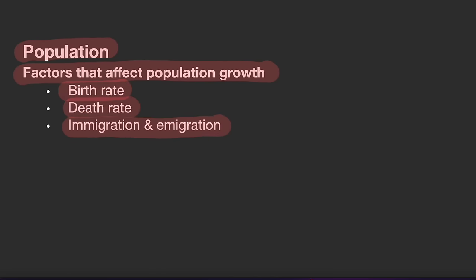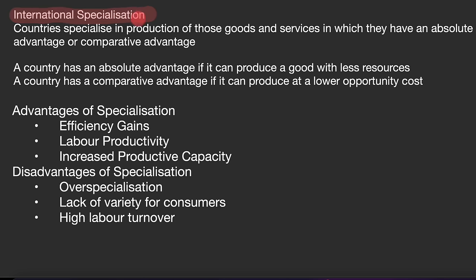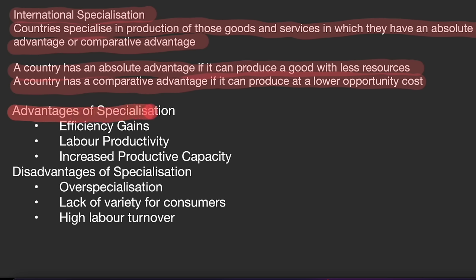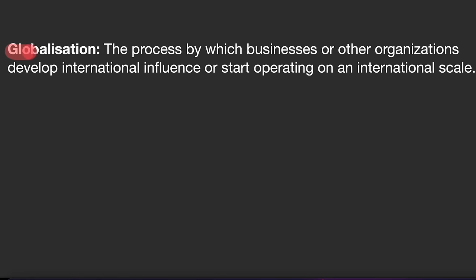Factors that affect population growth are birth rate, death rate, immigration, and emigration. With international specialization, countries specialize in producing goods and services in which they have an absolute advantage or comparative advantage. A country has an absolute advantage if it can produce a good with fewer resources. A country has a comparative advantage if it can produce at a lower opportunity cost. Advantages of specialization include efficiency gains, increased labor productivity, and greater productive capacity. Disadvantages include over-specialization, lack of variety for consumers, and high labor turnover.